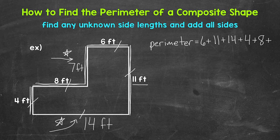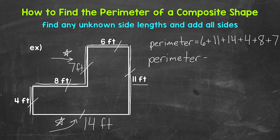So 6 plus 11 is 17, plus 14 is 31, plus 4 is 35, plus 8 is 43, plus 7 is 50. So the perimeter equals 50 feet. That's how we find the perimeter.